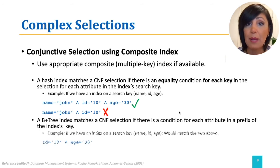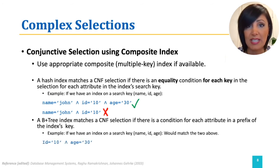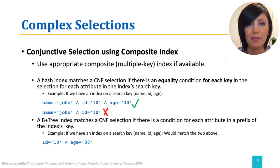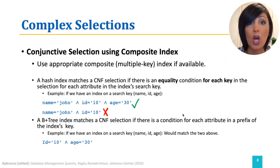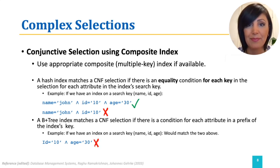If we have a B+ tree index with the same composite search key, although it would match both of the conditions above, conditions like id equals 10 AND age equals 30 will not match, as the tuples are sorted primarily by name. That is the meaning of prefix.